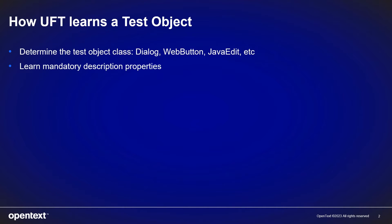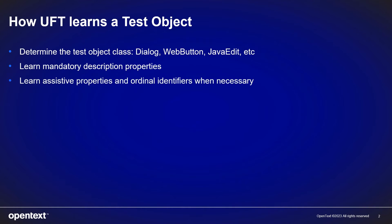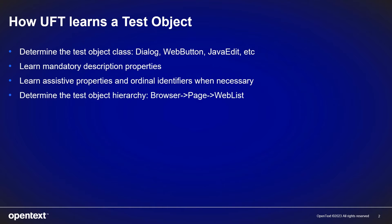Then, UFT learns mandatory description properties to uniquely identify a test object among all objects in the application under test. If mandatory properties are not sufficient, UFT learns assistive properties too. And if that is still insufficient, UFT learns the ordinal identifier for that test object. Along with the nature of the object, UFT One also learns the test object hierarchy. So a web list is stored in the hierarchy of browser, page, and web list.